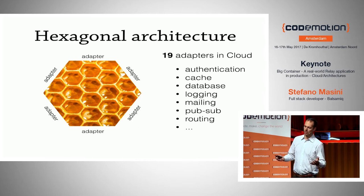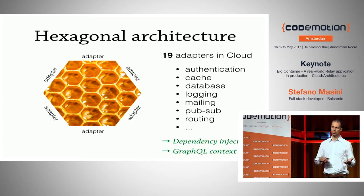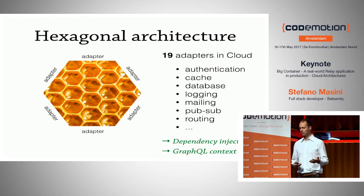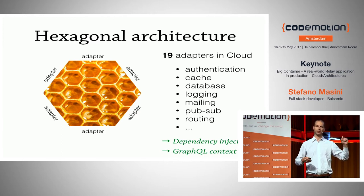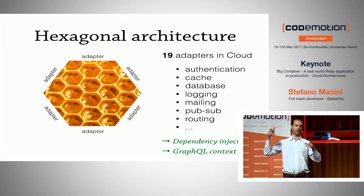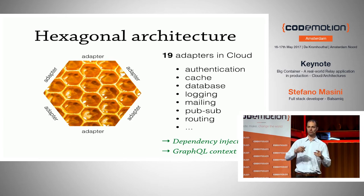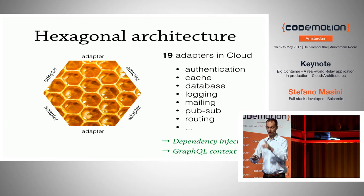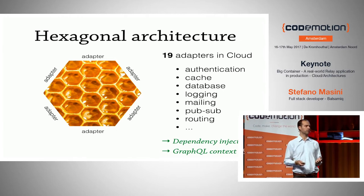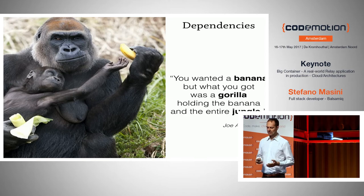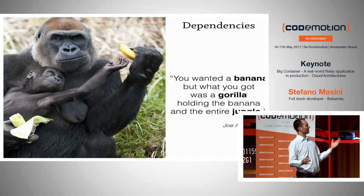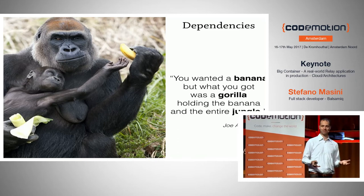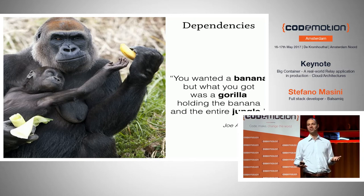The way you make these services available through the codebase is through dependency injection. You see relatively few import statements in our code, but a lot of adapters being passed in as function parameters, all made available through the GraphQL context. Basically, the problem we're trying to solve is this — a quote from Joe Armstrong that I really like: if you wanted a banana but what you got was a gorilla holding the banana and the entire jungle. That's the problem we're trying to solve with this pattern.